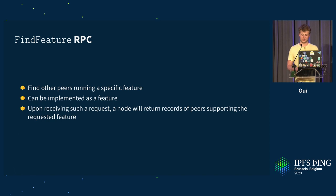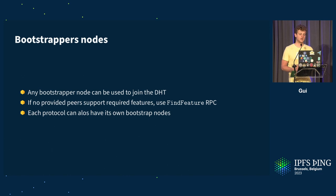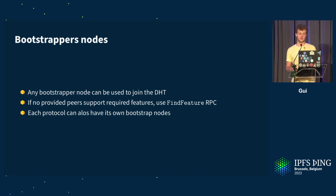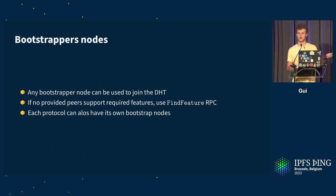Concerning bootstrapper nodes, any bootstrapper can be used to join the DHT — it could be the IPFS bootstrappers or any other application's bootstrappers. You join and then find nodes running your feature, either using the find-feature mechanism or having the bootstrapper say: you joined the network, what protocol are you running? I know people running many different protocols, I can give you what you want.